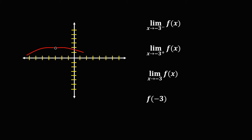Then for this given, the limit of the function as x approaches negative 3 to the left — this one is negative 3, and to the left — therefore the limit is equal to positive 2. Then the limit as x approaches negative 3 to the right is also equal to positive 2.